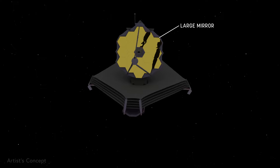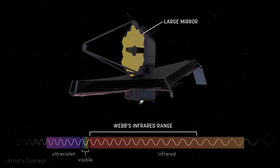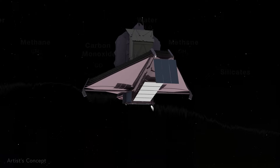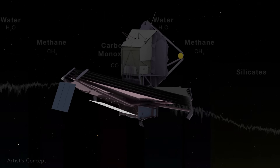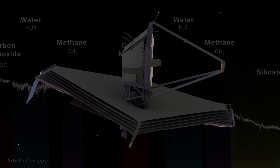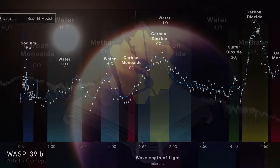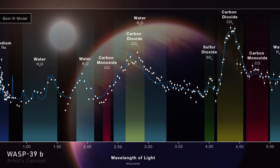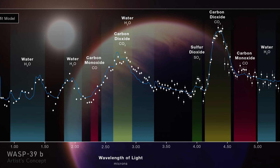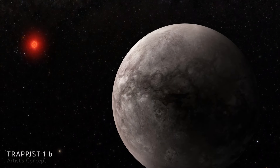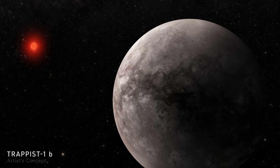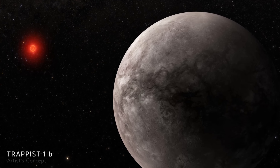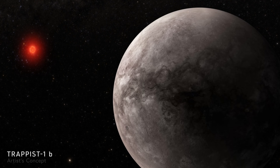With its large mirror, high degree of infrared sensitivity, and spectroscopic capabilities, Webb can explore a greater diversity of molecular components of an exoplanet's atmosphere than ever before. From finding sulfur dioxide present in the atmosphere of gas giant exoplanet WASP-39b, to noting the absence of a significant atmosphere on TRAPPIST-1b, a rocky exoplanet somewhat larger than Earth, Webb is advancing the field of exoplanet science.